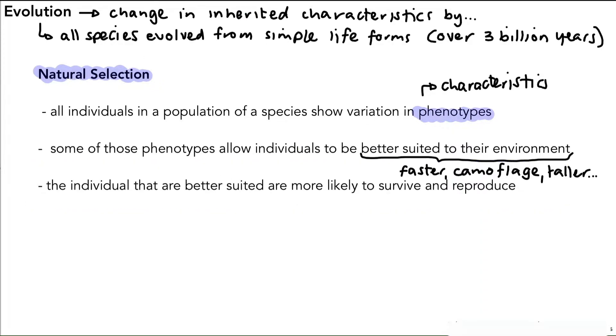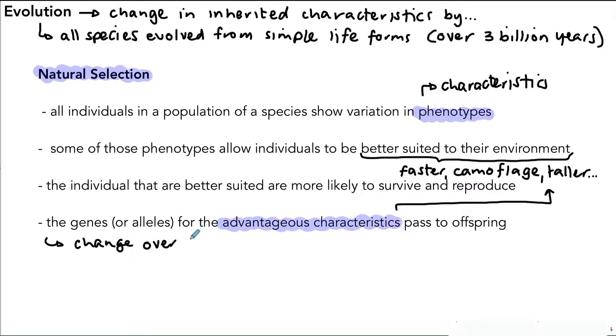The next point is that individuals that are better suited for the environment are more likely to survive and reproduce. Therefore, the genes or the alleles for the advantageous characteristic - in other words for those phenotypes we just described - are passed on to offspring. The advantageous characteristics could be those three we've mentioned, and this will cause changes over a period of time in the characteristics of those species, and those would be inheritable characteristics carried in the genes.